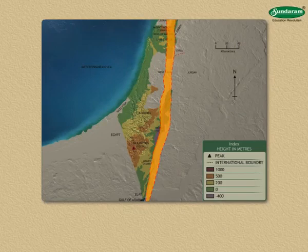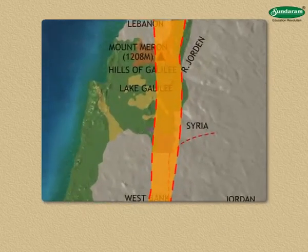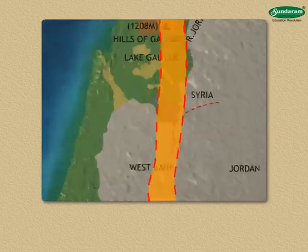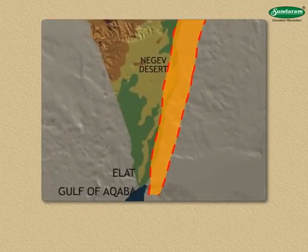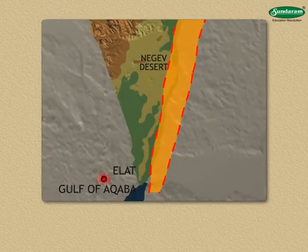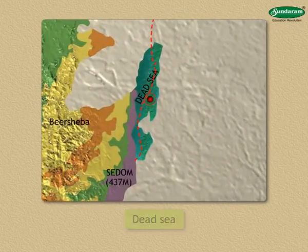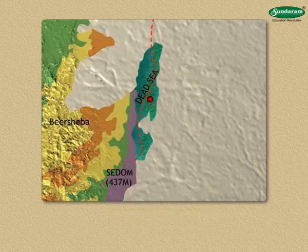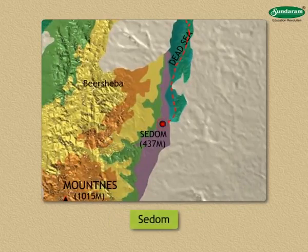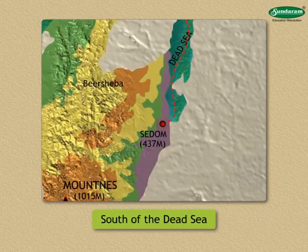A part of the deepest rift valley in the world, the rift valley in Israel extends from its northern boundary to the Gulf of Aqaba in the south. The Dead Sea, with the highest salinity in the world, lies in this region. The rift valley is deepest at Sodom, which is to the south of the Dead Sea.